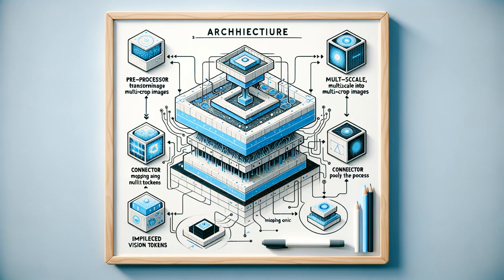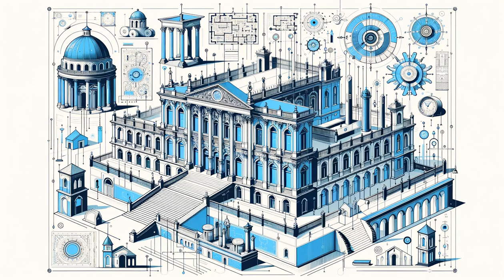The blog post makes it clear how these pieces fit together: the model architecture follows the simple and standard design of combining a language model with an image encoder. It consists of four components: a preprocessor that converts the input image into a set of multi-scale, multi-crop images; a ViT image encoder that independently maps each of these images into a set of vision tokens; a connector that projects the vision tokens to the language model's input dimension with an MLP and then pools the vision tokens to reduce their count; and a decoder-only transformer LLM. Note that all model parameters are updated in both stages rather than being frozen, and no RLHF or preference tuning was used on these models.